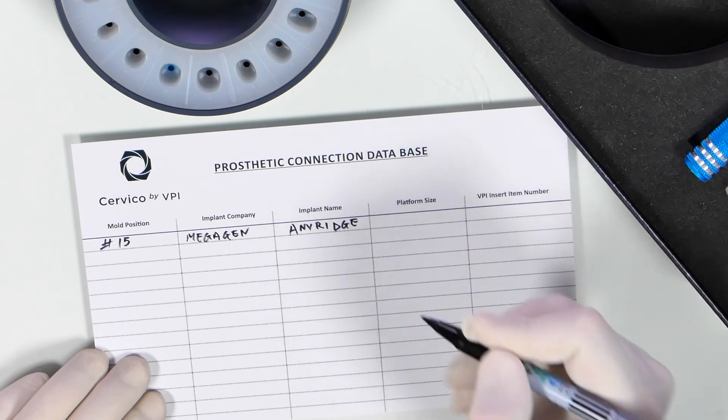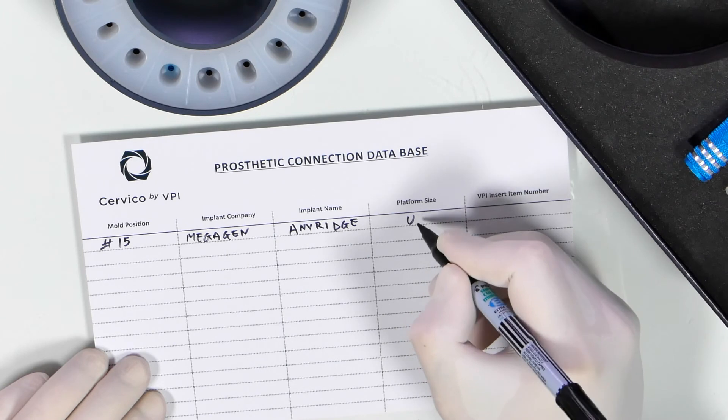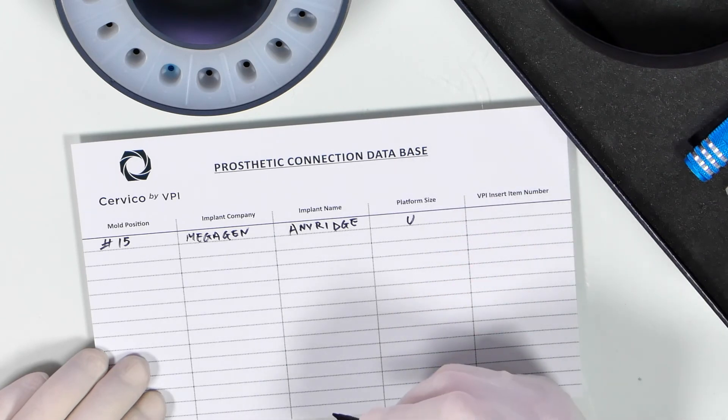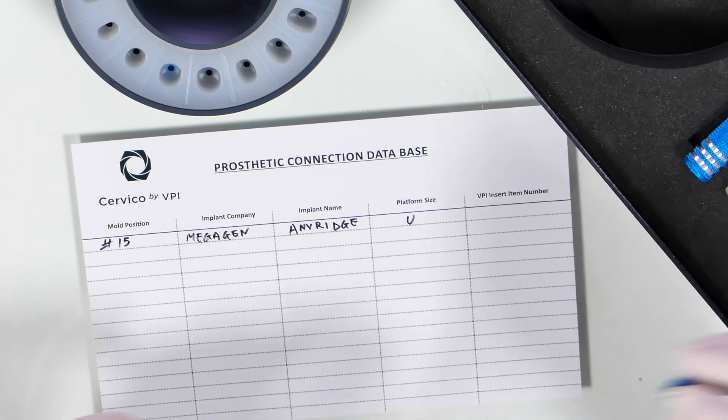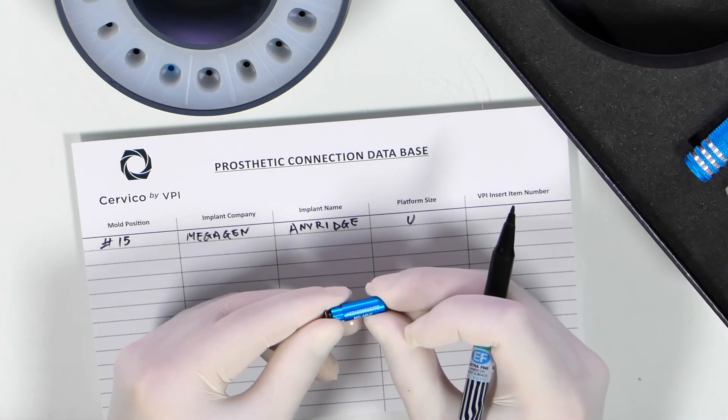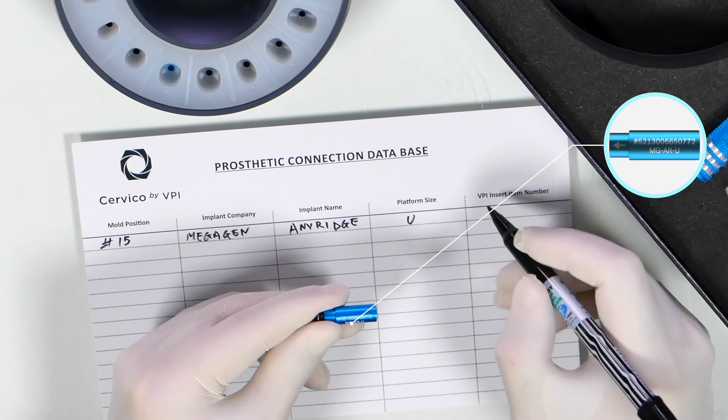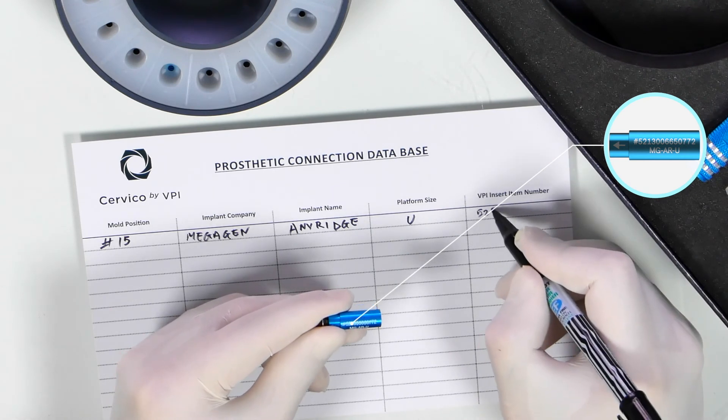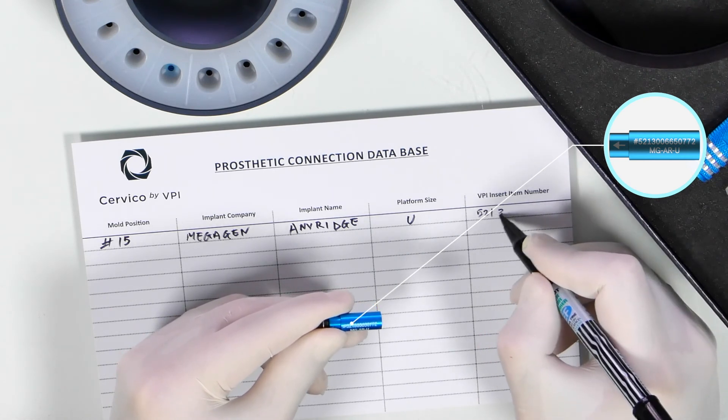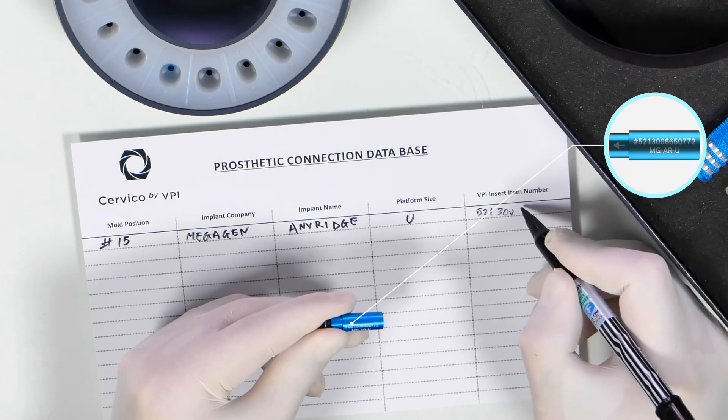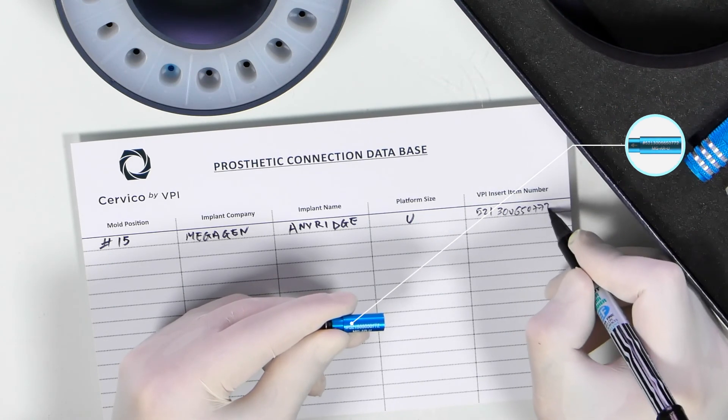Finally, the VPI insert item number will be filled in the same card. So in case the VPI insert needs in the future to be replaced for any reason, you have the item number that you need to order for this replacement to take place. Thank you for watching.